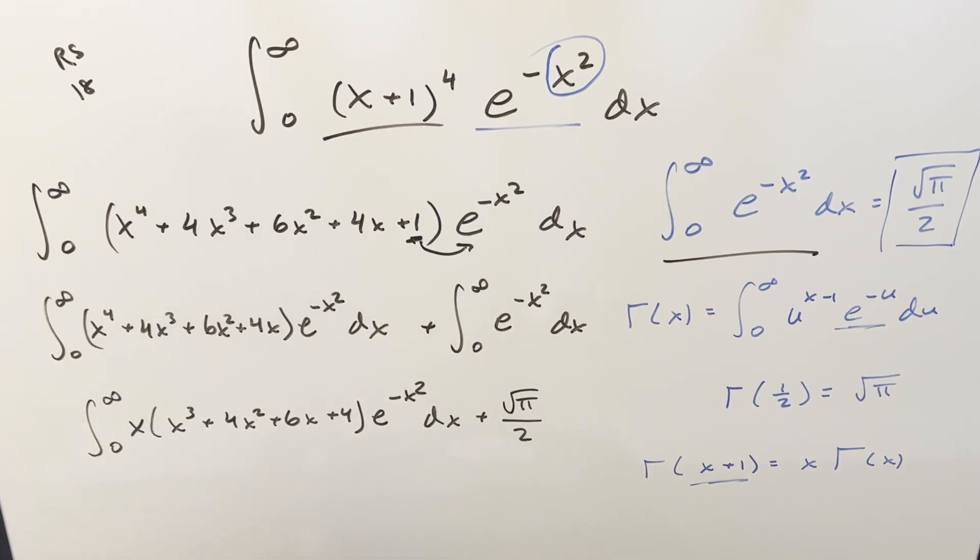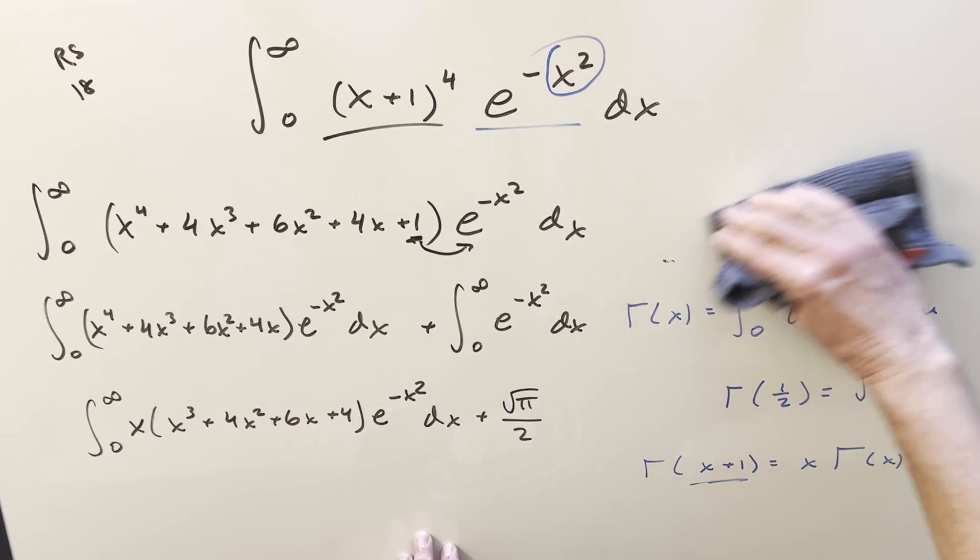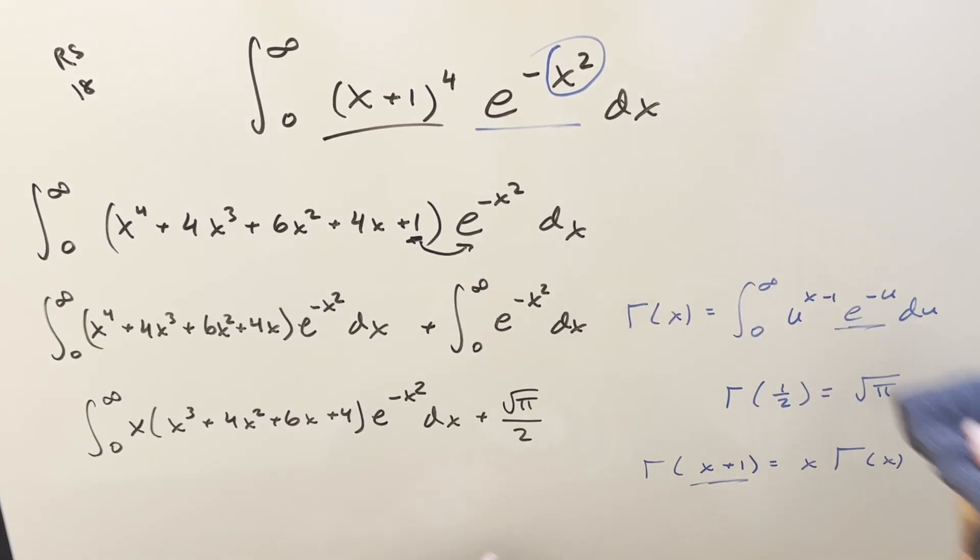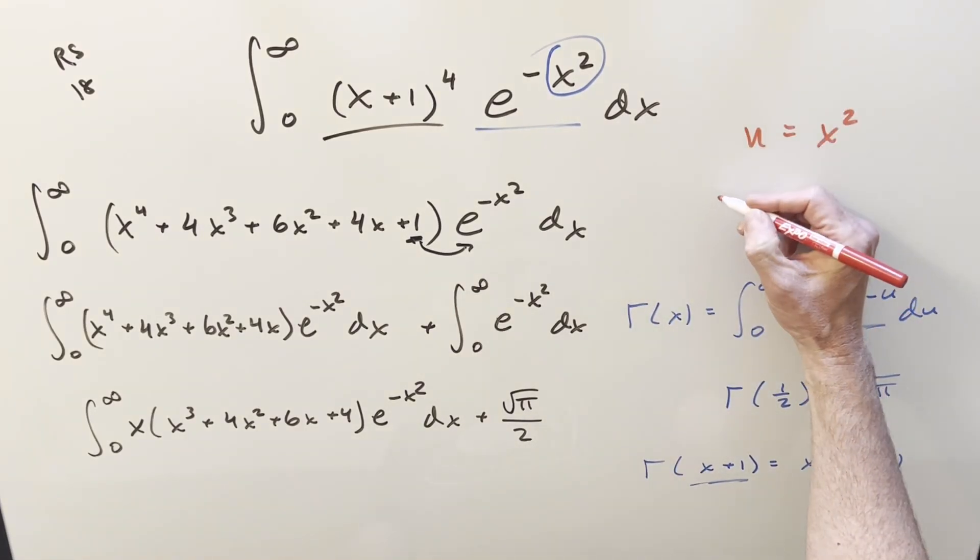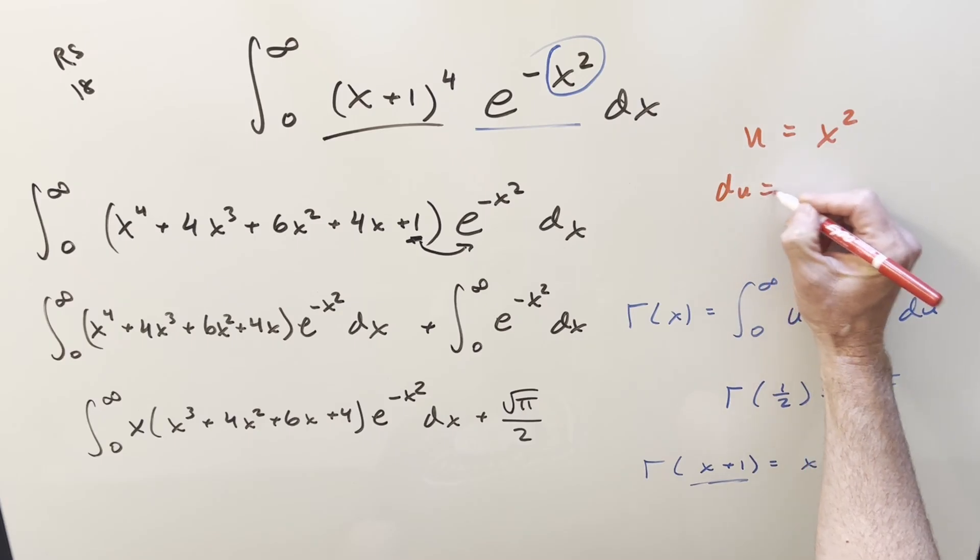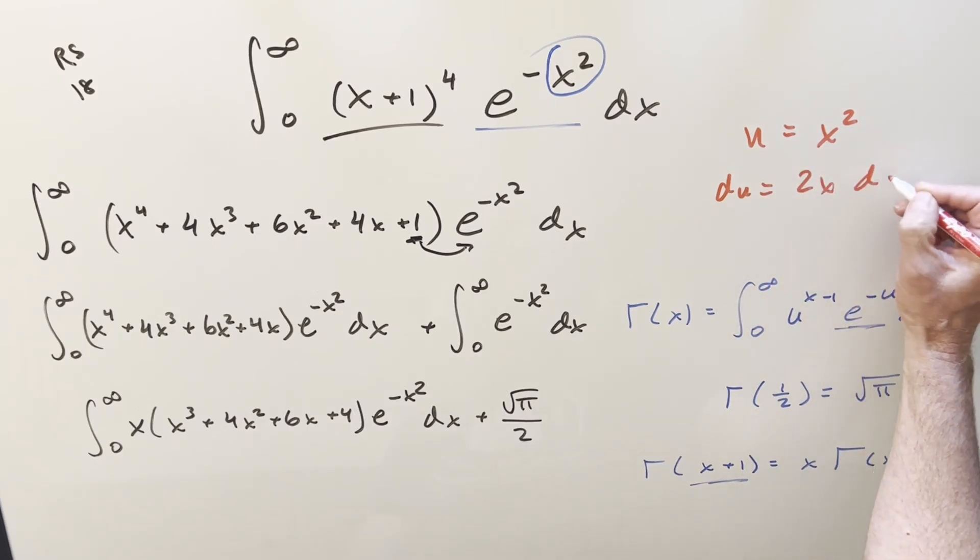And then here on this, what I want to use is I want to get this where we can use the gamma function, but we need that u substitution to get it. So we just have a u and not the x squared. So how we'll do this, I'm just going to substitute u equal to x squared. Then doing this, then take a derivative, we're going to have du is going to be just 2x dx.